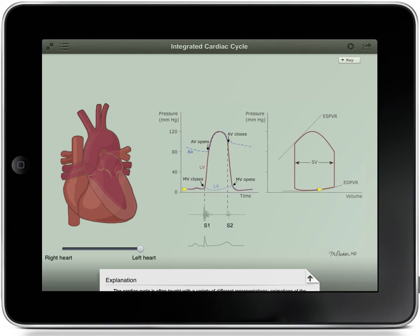For example, this diagram may help you see the correlation between mechanical events and the heart sounds, between the tracing of the heart's electrical activity and the changes in pressure, and between the pressure of the left ventricle and its volume.